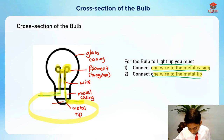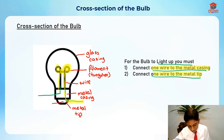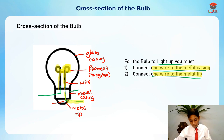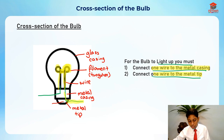If both wires were connected to the metal casing only, there would be two wires connected to the metal casing and the light bulb would not light up. So you must always have one wire to the metal tip and one to the metal casing.